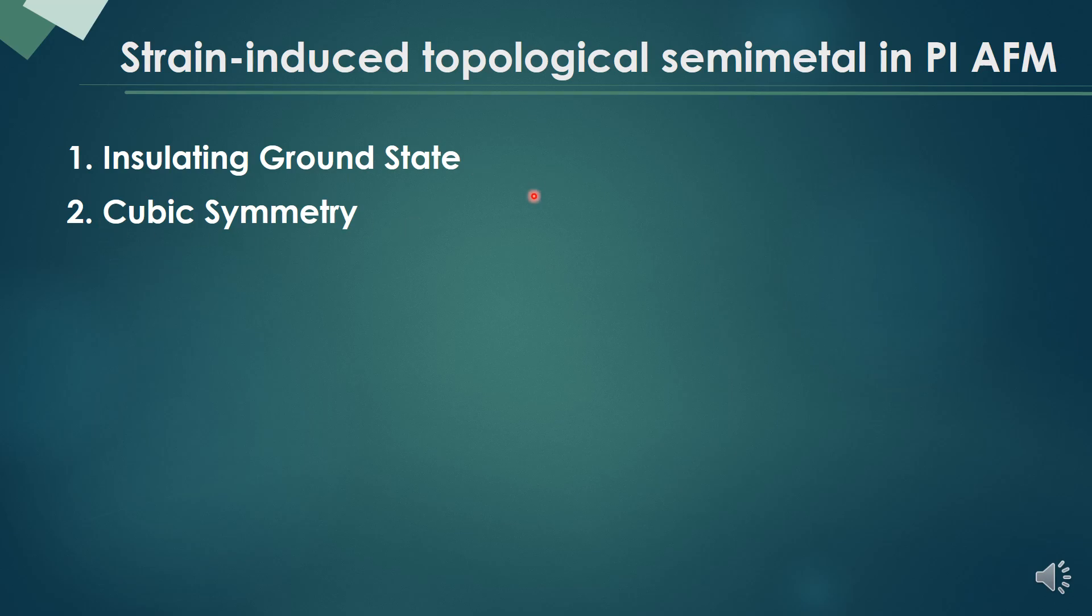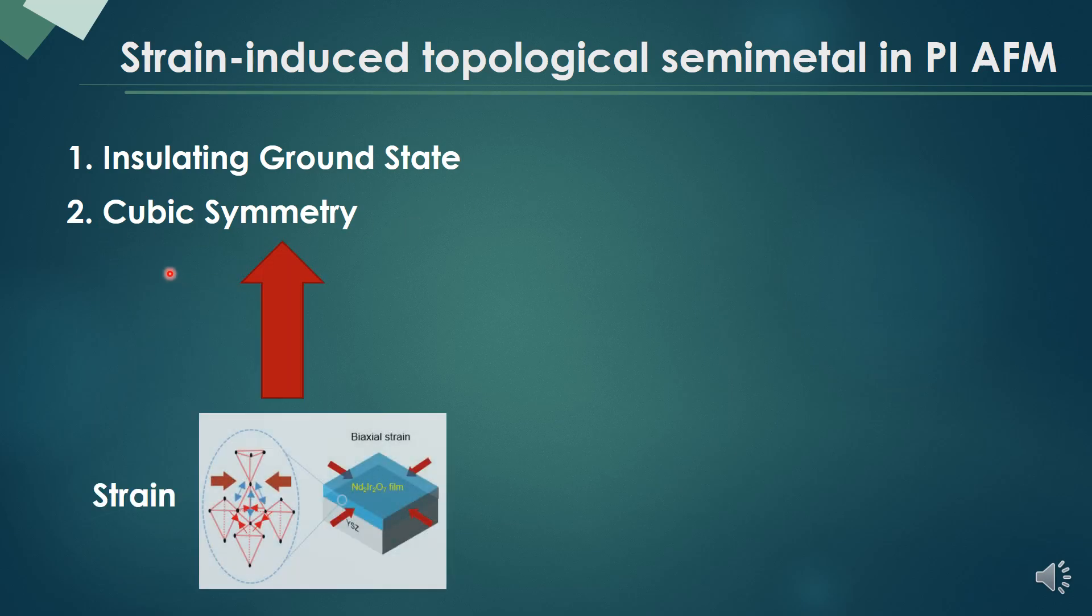We can overcome the two difficulties by using strain. First, the strain can break the cubic symmetry. Therefore, if the system is Weyl semimetal, then we can detect the signal like anomalous Hall effect.